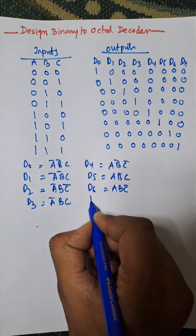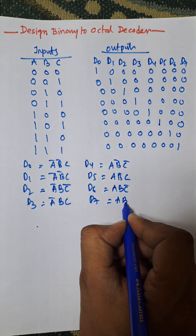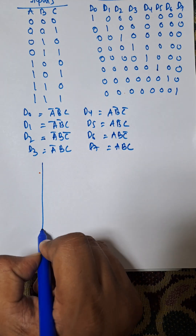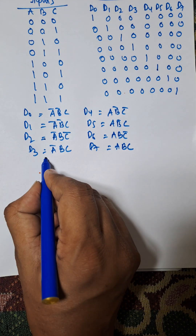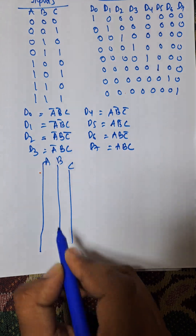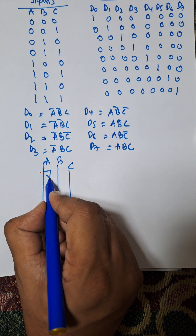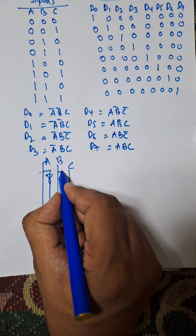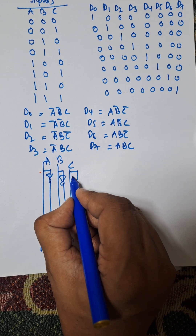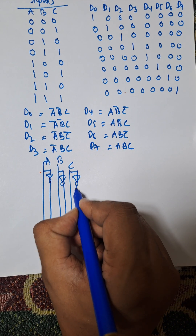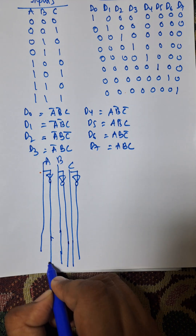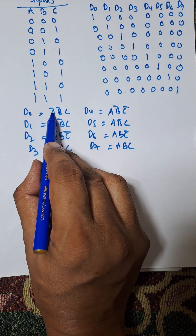For D6, the Boolean expression is A B C-bar. For D7, that is A B and C. Now for the circuit diagram, there are three inputs A, B, and C. We need to find the complements: A-bar, B-bar, and C-bar.